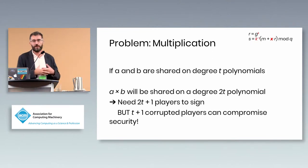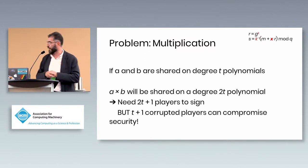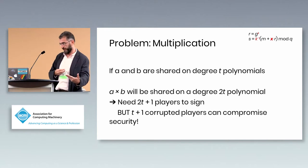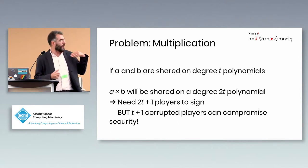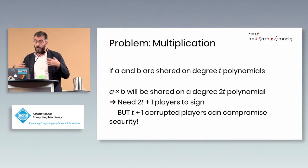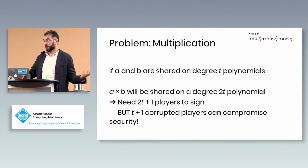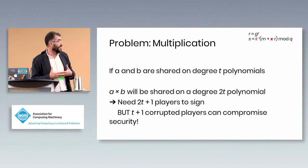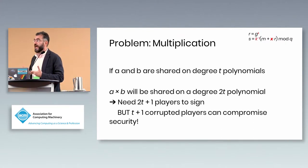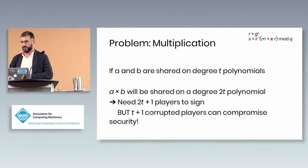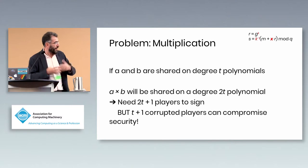If you share your key using standard Shamir secret sharing, your shares are points on a degree-t polynomial whose free term is the secret key x. The problem is that DSA requires multiplying k and x. Since k must also be secret, it is shared too. When you multiply two degree-t polynomials, you get a degree-2t polynomial, meaning you need 2t+1 parties to reconstruct the signature — doubling the required threshold.